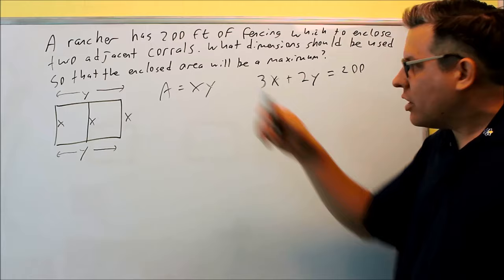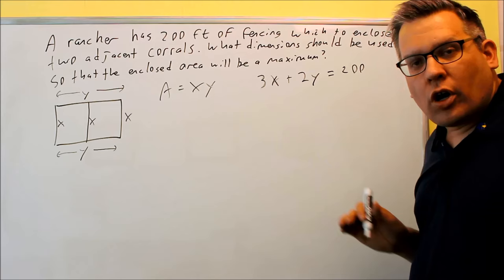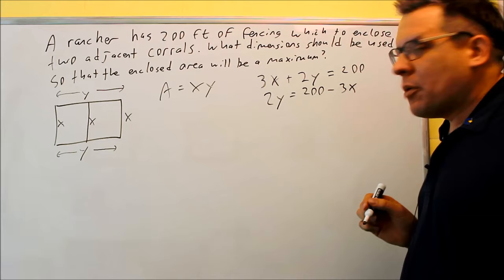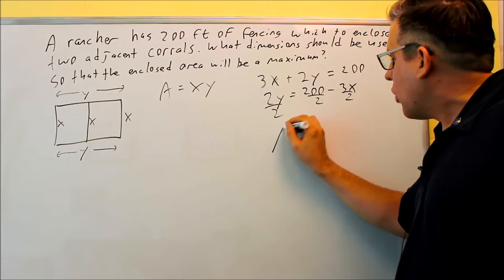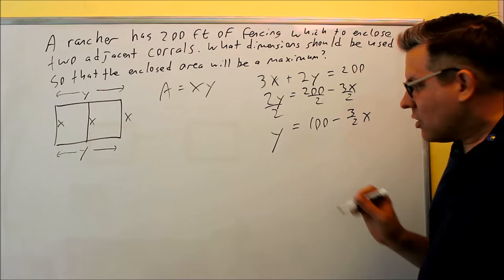Now, what you can do here is you can solve for either x or y. It doesn't matter. Put it into here and then we'll take the derivative. I'm going to solve for y in this case, but again, you could do either one. So two y is going to equal 200 minus three x and I'm going to divide everything by two. y is equal to 100 minus three halves x.